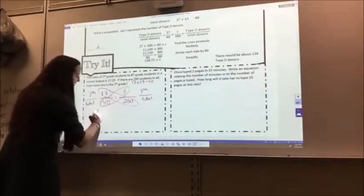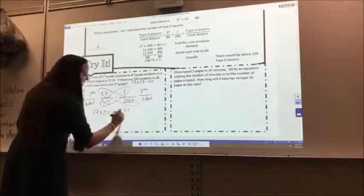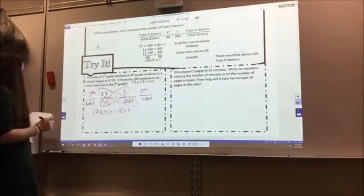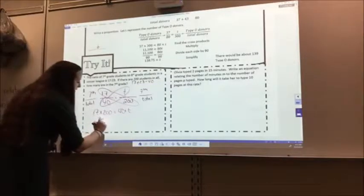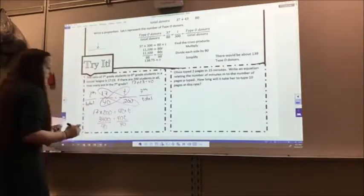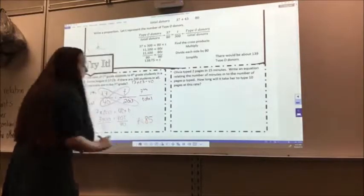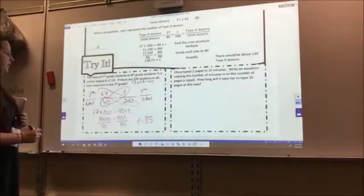So I have 17 times 200 equals 40 times t. 17 times 200 is 3,400 equals 40t. I divide both sides by 40. T equals 85, so there's 85 seventh graders.